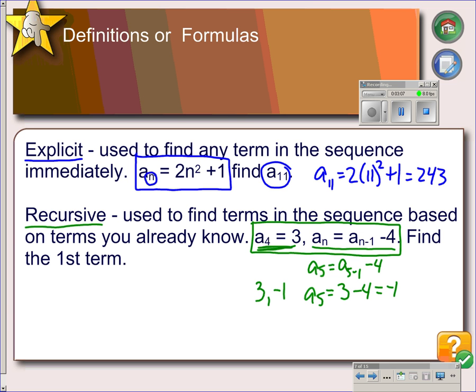If I wanted to know the third term, then instead of subtracting 4, I would add 4, and the second term would be 11, and the first term would be 15. So the only way to find the first term is to go through all the terms from the one you know until you get to the one you want.